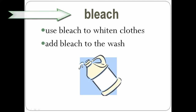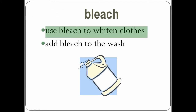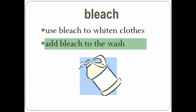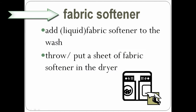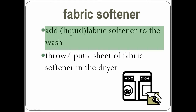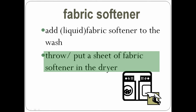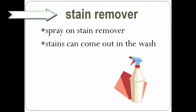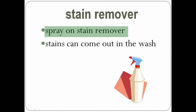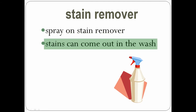Bleach — we use bleach to whiten clothes. You add bleach to the wash. Fabric softener — you add fabric softener to the wash. You throw or put a sheet of fabric softener in the dryer. Stain remover — spray on stain remover. Stains can come out in the wash.